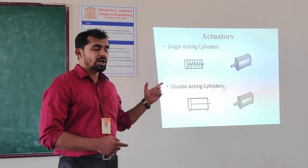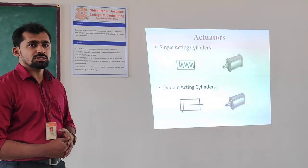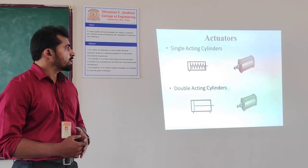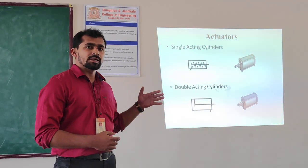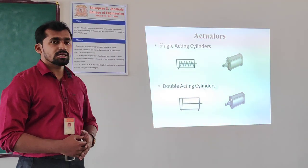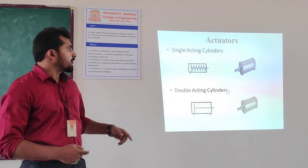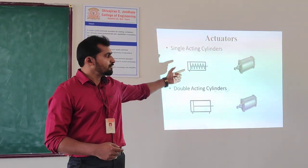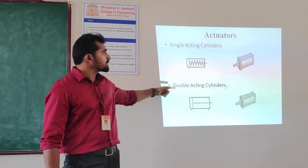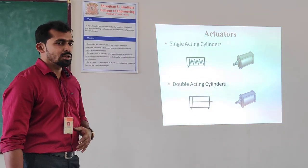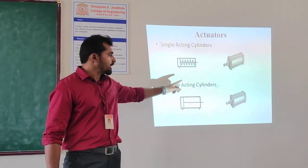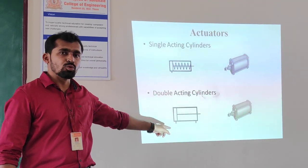So these are the two actuators. Actuators are of two types: one is linear and another is rotary. In this lecture we are going to discuss linear actuators. These are of two types: single acting cylinder and double acting cylinder. Both cylinders physically look alike, but the internal construction of both cylinders is different. In single acting cylinder there is only one port, whereas in double acting cylinder there are two ports.